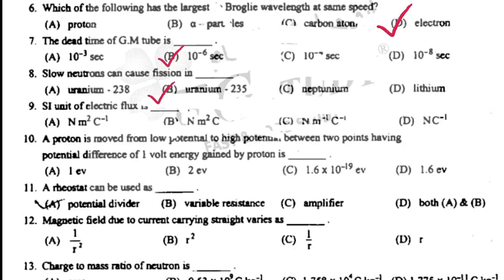SI unit of electric flux is Nm square per coulomb. A proton is moved from low potential to high potential between 2 points having potential difference of 1 volt, energy gained by proton is 1.6 multiplied by 10 to the power minus 19 eV.